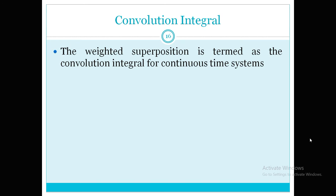The weighted superposition is termed as the convolution integral for continuous-time systems. Just as we discussed the convolution sum for a discrete-time system, here we need the convolution integral because the signal is continuous in nature. We can't add for each and every point; instead we perform integration, so we need to go ahead with integration only.